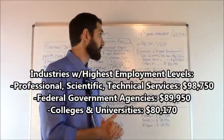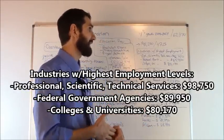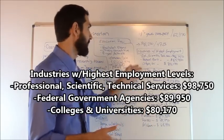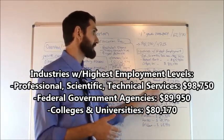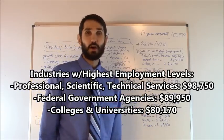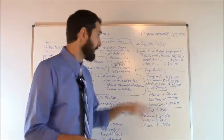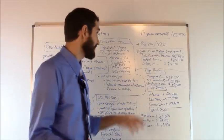The federal government, number two, the average salary there $89,950. And then number three were colleges and universities, $80,170 was the average salary there. Now what about the top paying industries for veterinarians?